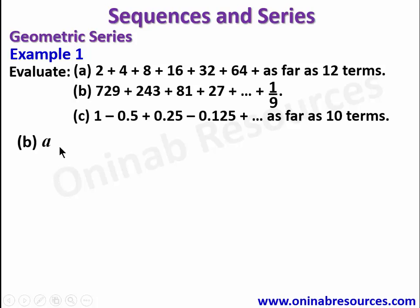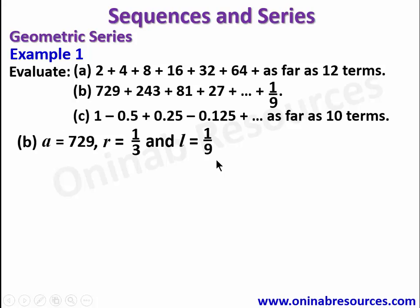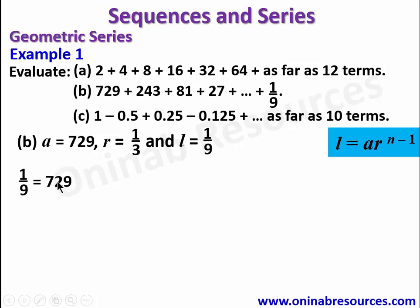For B, the first term is 729 and the common ratio is 243 divided by 729, which is 1 over 3. Here we don't know the number of terms, so we get the number of terms from the last term. The last term is 1 over 9. We recall that the nth term of a geometric progression is L = ar^(n-1), so we use that to find n. We have 1/9 = 729 × (1/3)^(n-1).